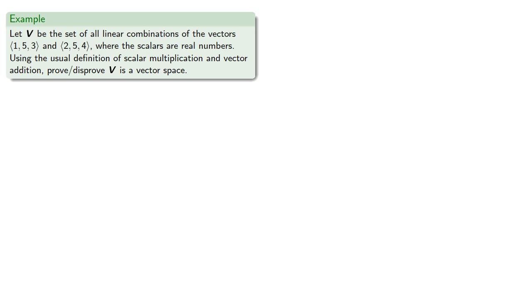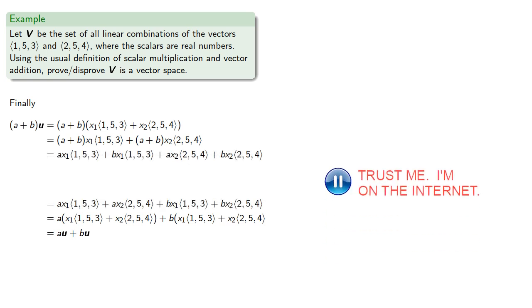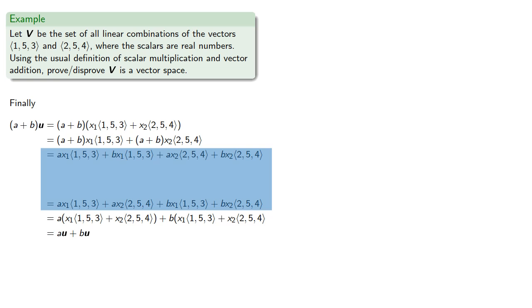Finally, we want to show that u distributes over a scalar, so we want to start with (a + b)u and end with au + bu. We know that u is a linear combination of (1, 5, 3) and (2, 5, 4), so we can substitute that in and work our way towards the middle. And now we have a gap which we can bridge by rearranging the terms, which proves the last of our 10 requirements for vector space.